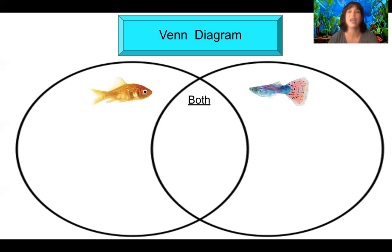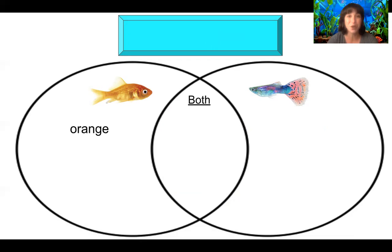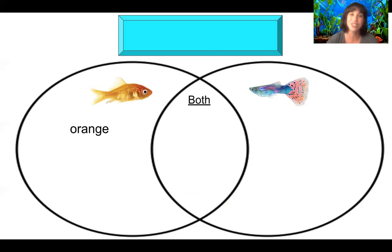Let's take a look at our first word. Our first word is orange — the color orange. With your pointer finger, show me where should we put the word orange. Should it go under goldfish, under guppy, or under both? If you said orange should go with goldfish, you're right. Sometimes guppies can be orange too, but when we look at these two fish, the goldfish is definitely the one with the most orange.